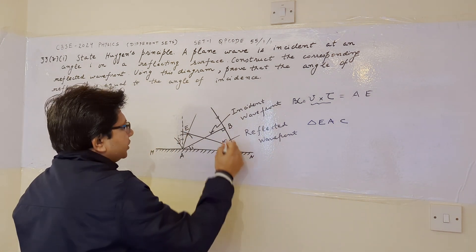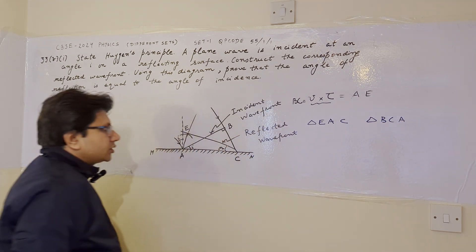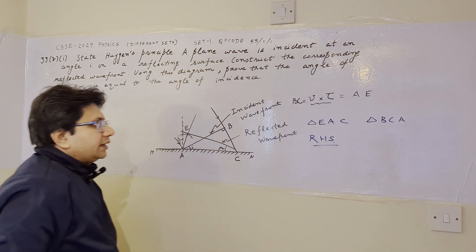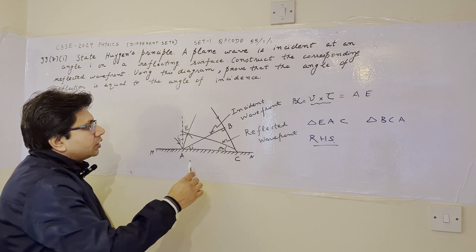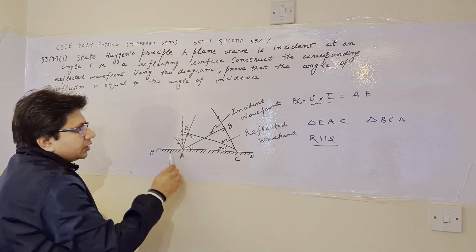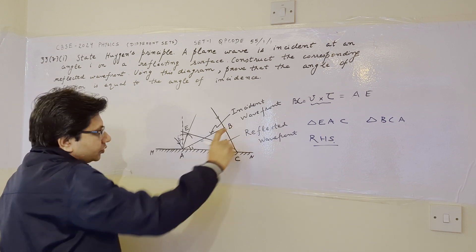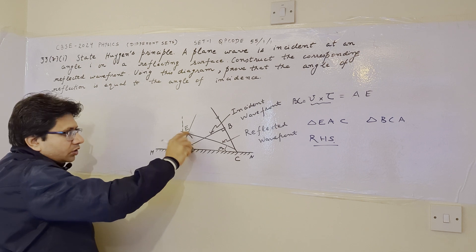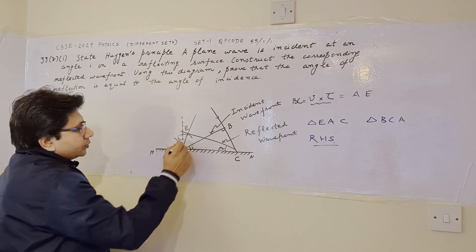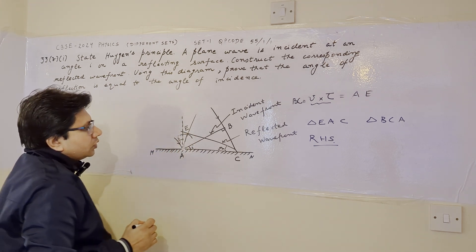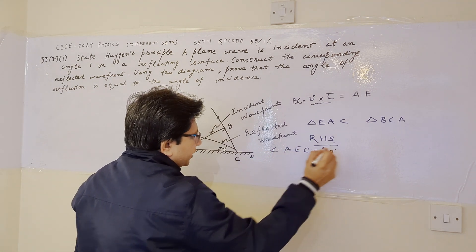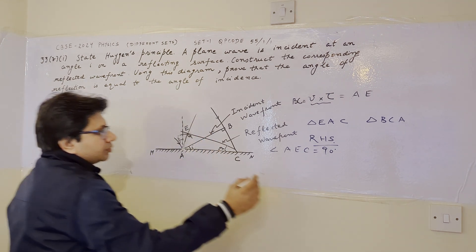Now we consider two triangles: triangle EAC and triangle BCA. These two triangles are congruent by the RHS rule — in a right-angled triangle, if any two sides match, the triangles are congruent. To locate point E, we take distance BC in the compass, place the compass point at A, and draw an arc. CE is the tangent drawn to this arc, giving us point E.